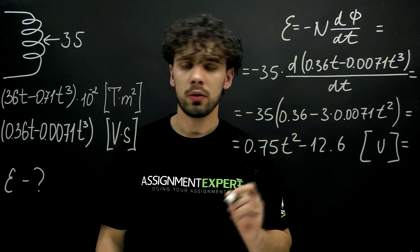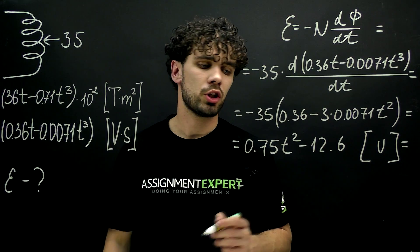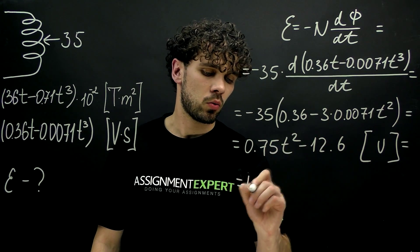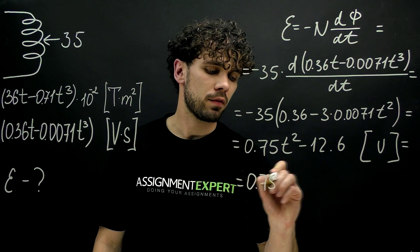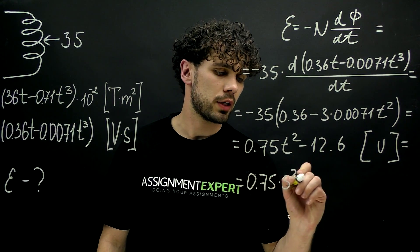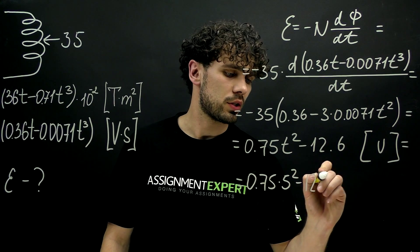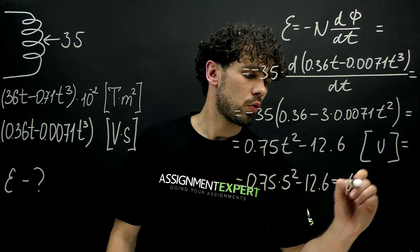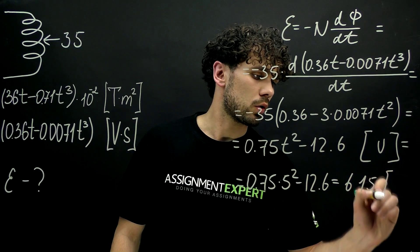And now to find the induced EMF at fifth second, we just need to put time five seconds into this formula. So 0.75 times 5 squared minus 12.6, and this gives us 6.15 volts.